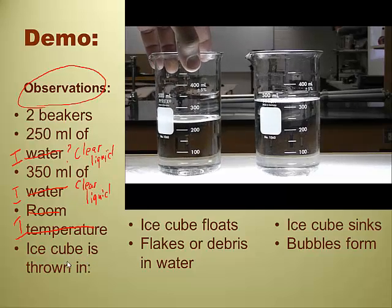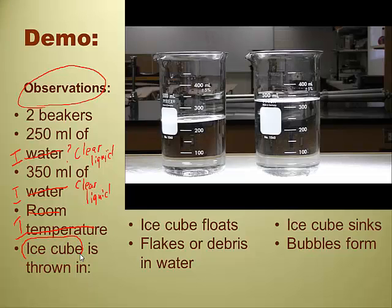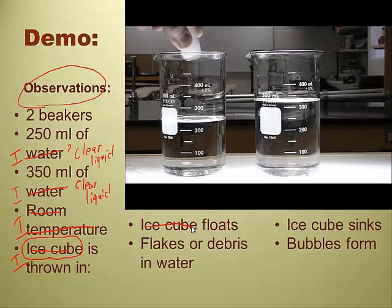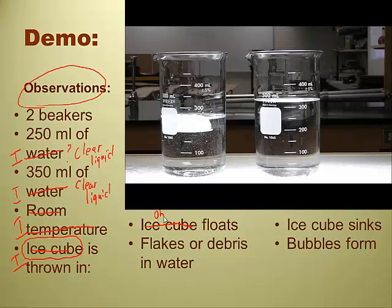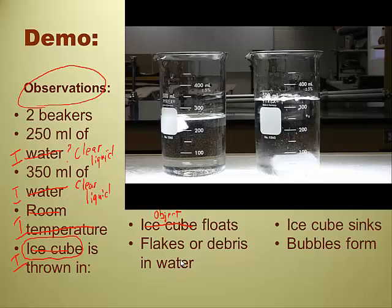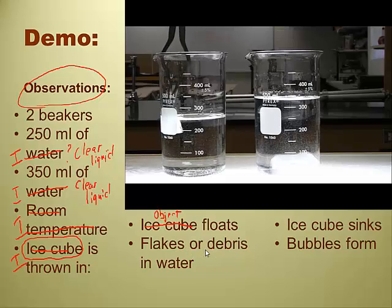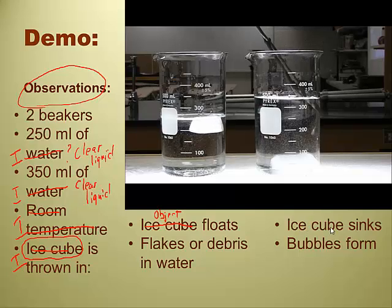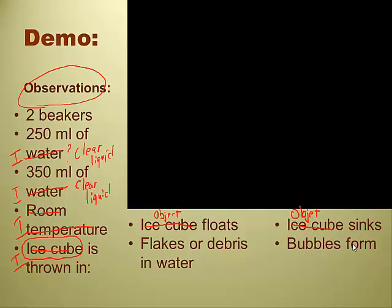Ice cube was thrown in? No, that's an inference too. It looked like an ice cube based on what I know about ice cubes — so something was thrown in. The fact that it was an ice cube is an inference. On the left, an object floated. On the right, an object sunk, and there were bubbles. There were also flakes or debris floating in the water. It's actually going to be difficult to make sure we always make observations, because that past prejudice — I really thought that was an ice cube — but unless I have more information, maybe it wasn't.